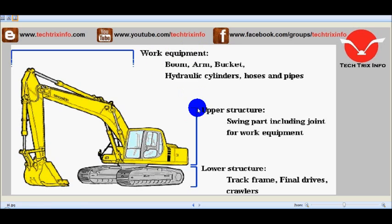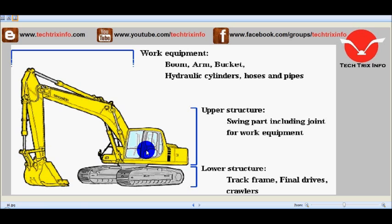The upper structure includes the cabin, counterweight, engine, and hydraulic excavator controls — this is the swing part. The lower structure includes the track frame, final drive, crawlers or tracks, and rollers. Together these make up the complete tracked hydraulic excavator machine.